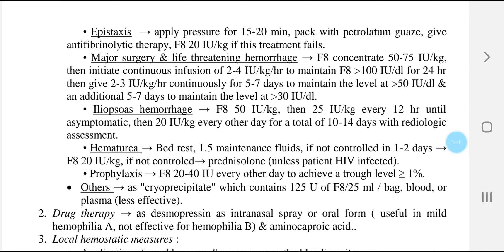In iliopsoas hemorrhage, give factor 8: 50 international units per kg, then 25 international units per kg every 12 hours until asymptomatic, then 20 international units per kg every other day for a total of 10 to 14 days with radiologic assessment. In hematuria, we need bed rest and 1.5 times maintenance fluid.